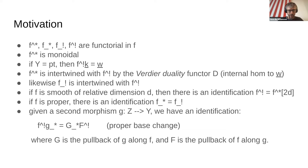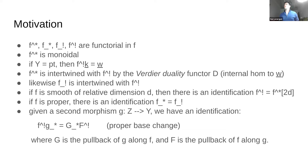A typo was pointed out in the fifth point — 'likewise' doesn't make much sense at the beginning; F-lower-shriek should be intertwined with F-lower-shriek. That fact is a consequence of Verdier duality being self-adjoint in some sense. An obvious question is: what are the other two functors, since it was called a six functor formalism but only four functors were discussed?